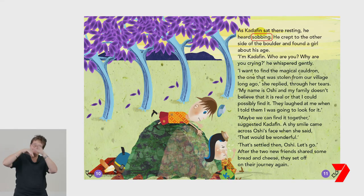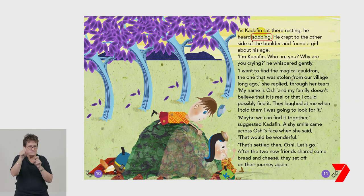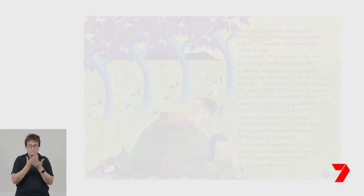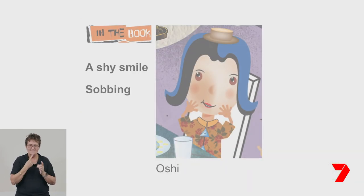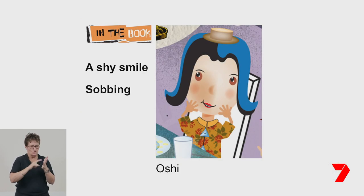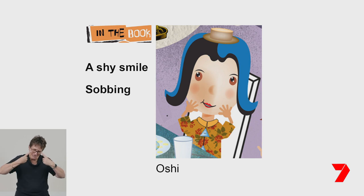Authors may also use verbs to help you build a picture in your mind about a character. For example, in the beginning of the story, the verb 'sobbing' relates to Oshii's actions. This tells me she is a sensitive character.